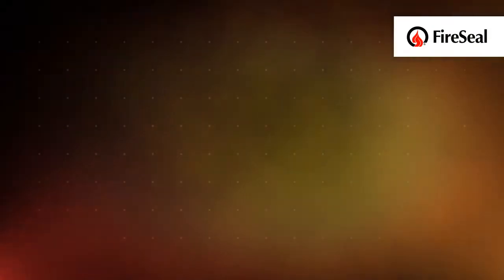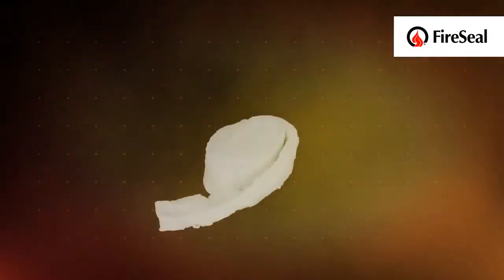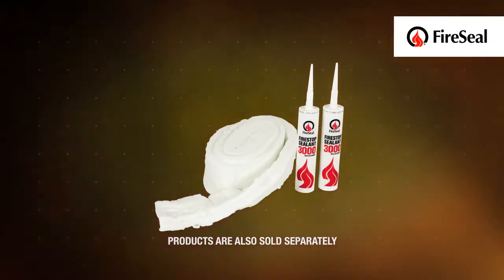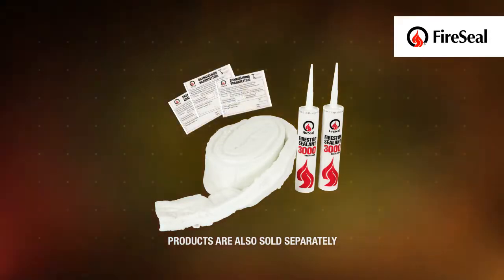FireSeal FS FlexD kit contains blanket D24B, two cartridges of FireStop Sealant 3000, installation instruction and three labels to name and classify installed sealing.